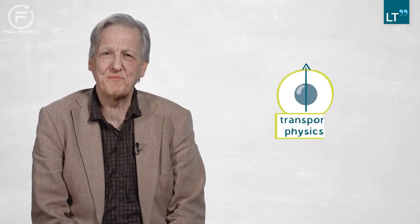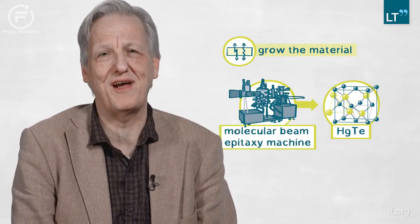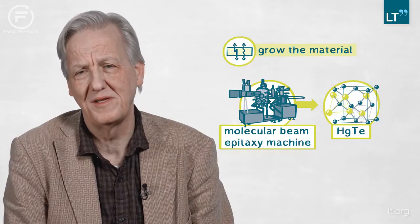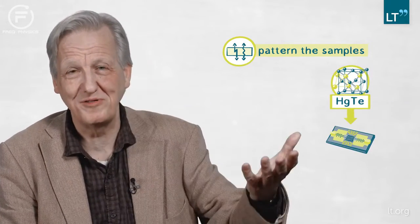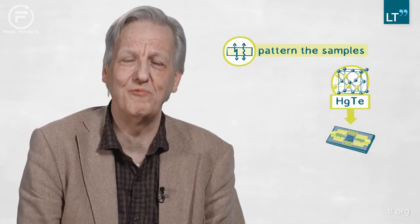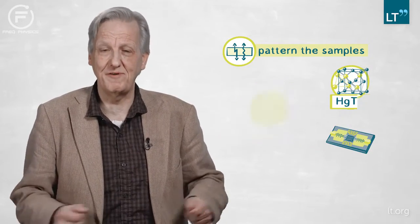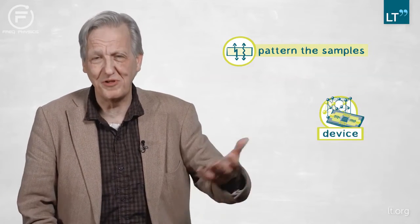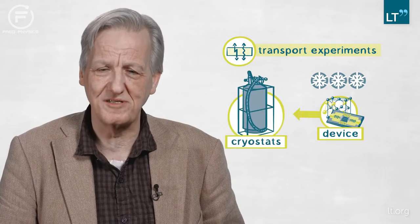The method we use is transport physics — we measure the conductance of electronic devices. This starts with the growth of the material; our semiconductors are pretty special and we have to grow them layer by layer in a molecular beam epitaxy machine, which is ultra-high-vacuum technology. Then we pattern these samples into very small structures, similar to transistors in chips, using lithography. We perform these conductance measurements at very low temperatures using extensive cryogenic equipment — cryostats.